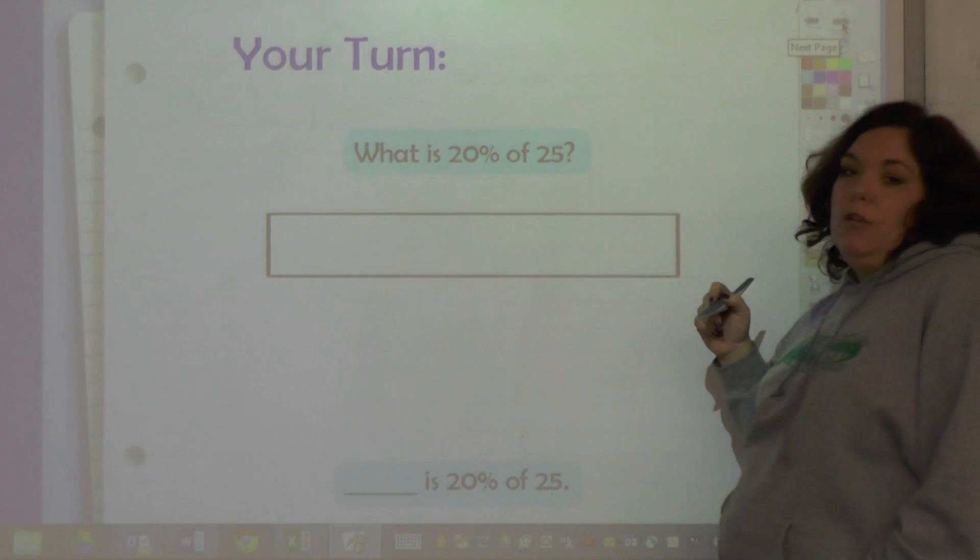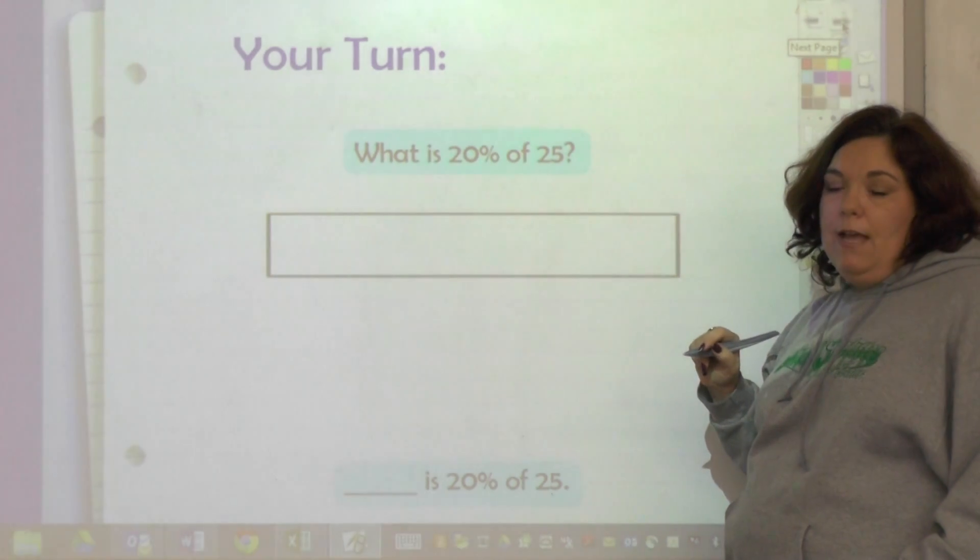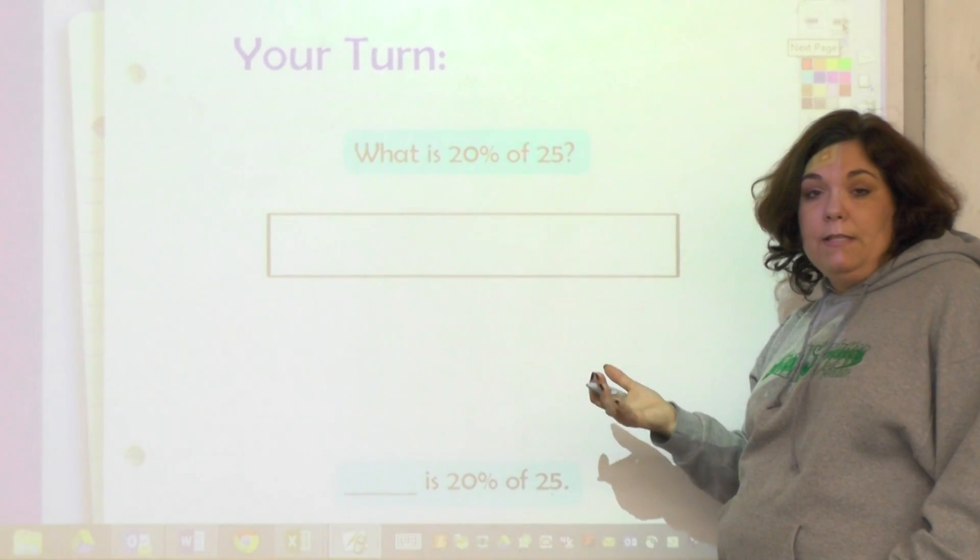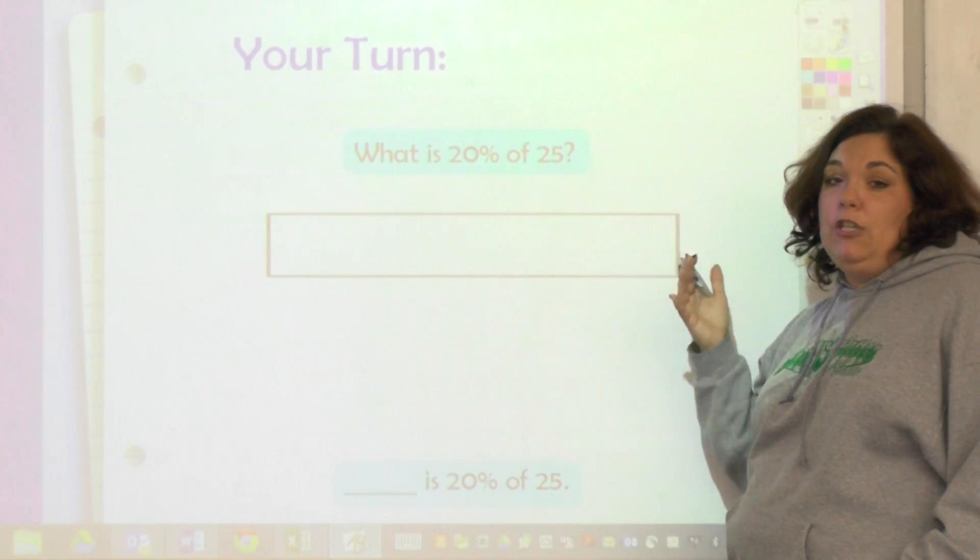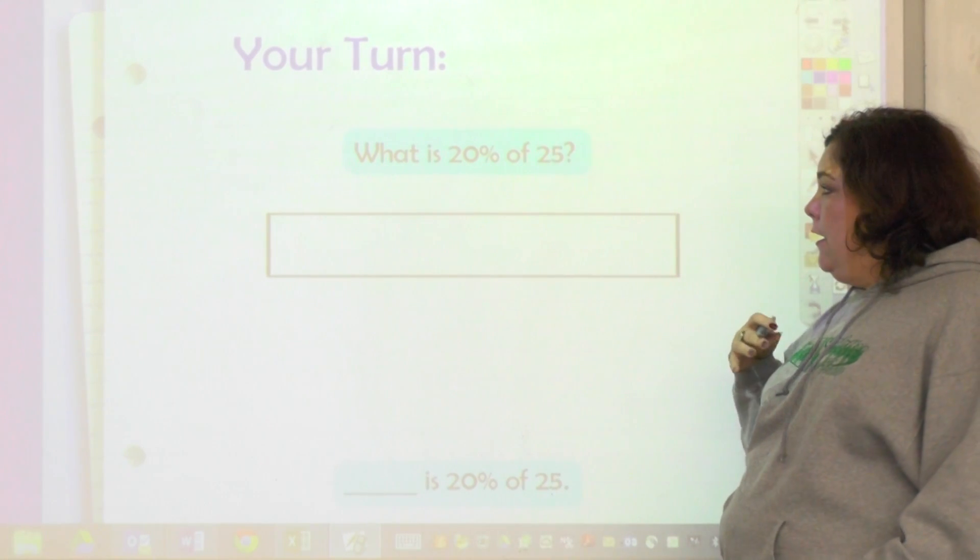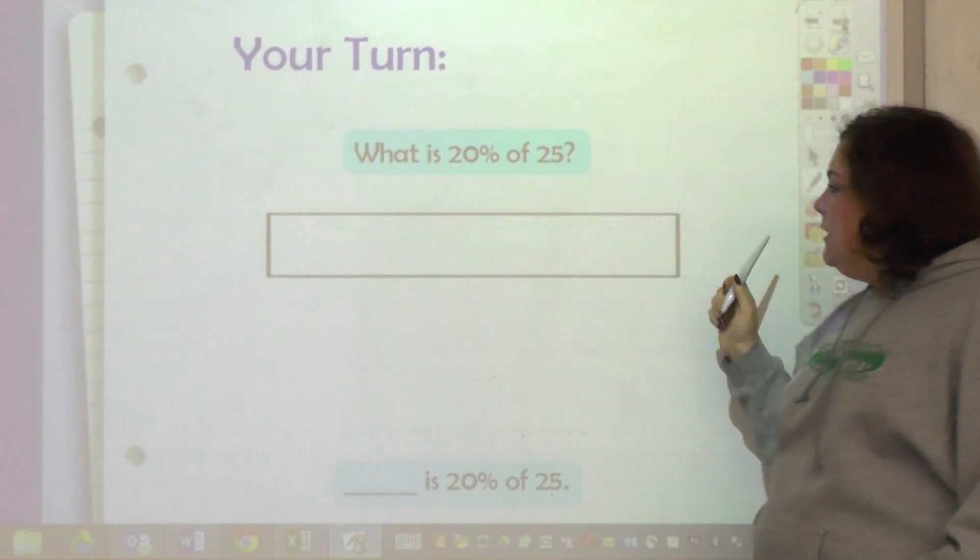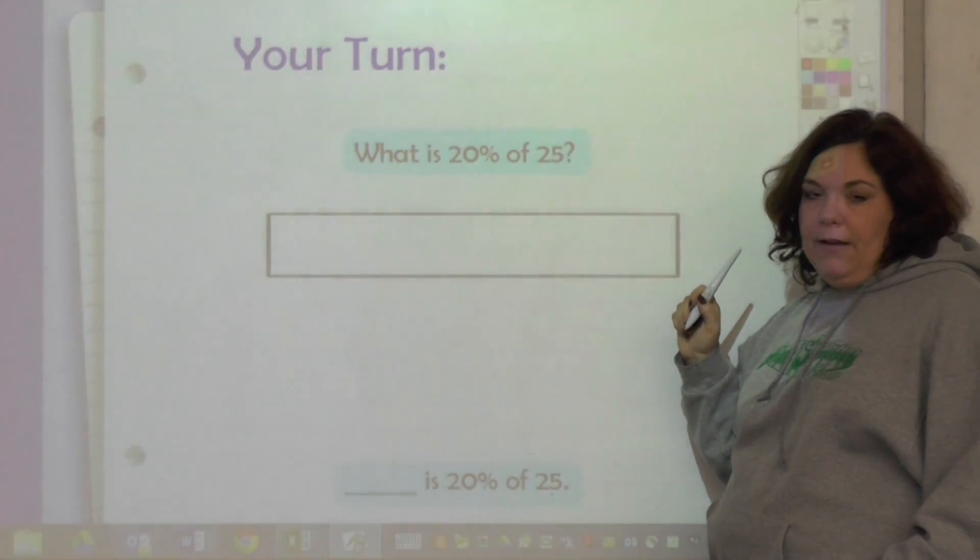So now it's your turn. What is 20% of 25? And 20% you can either turn it into fifths - divide it in five parts - or do tenths and divide it into ten parts. And if you divide it into ten parts, this is going to be a decimal, but that's okay. So you decide and come back and see how it goes.